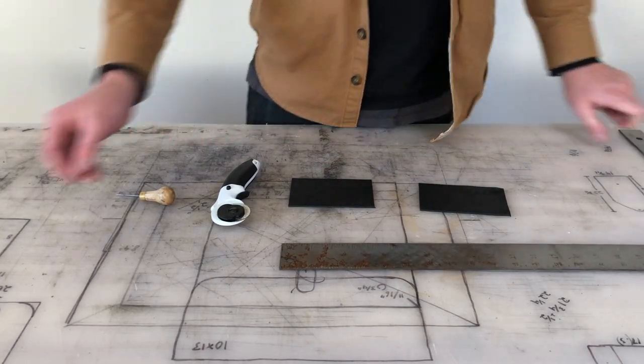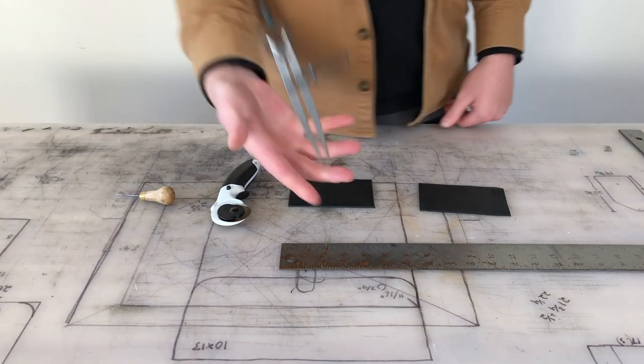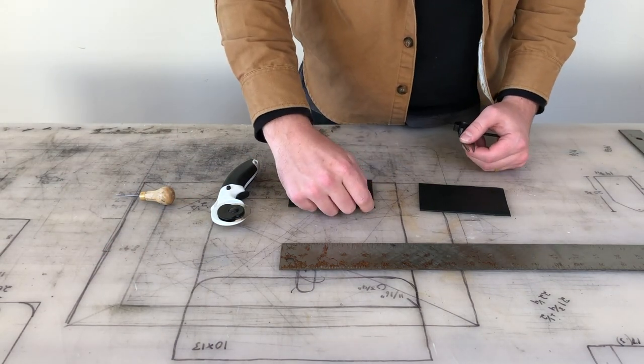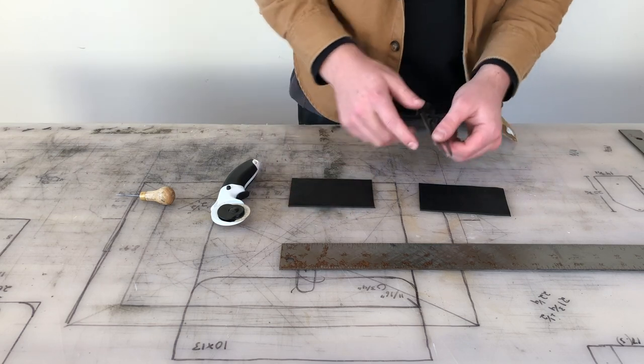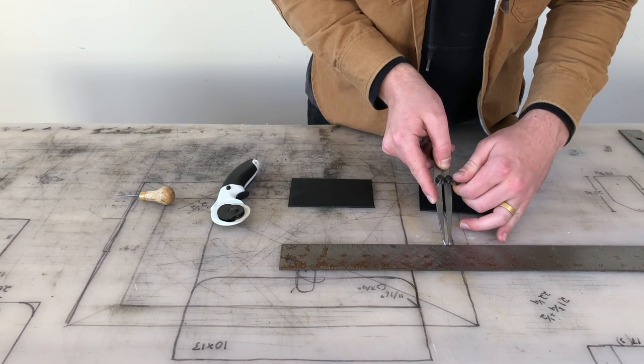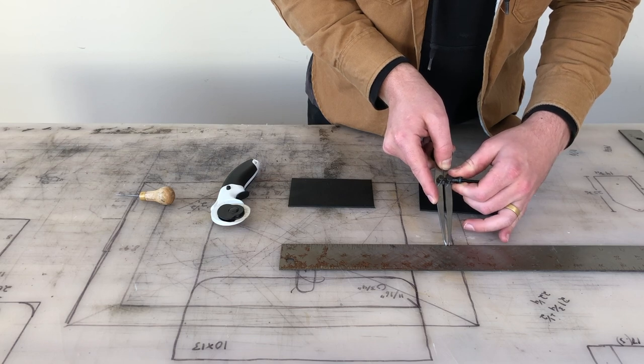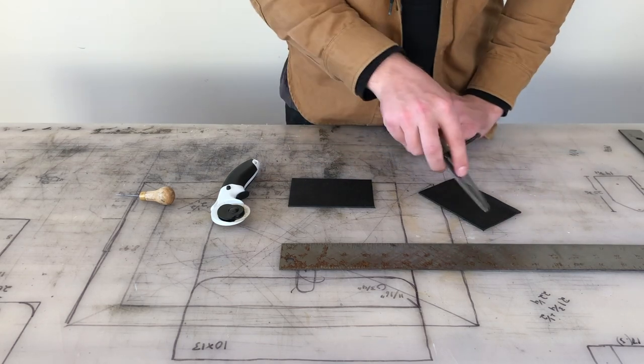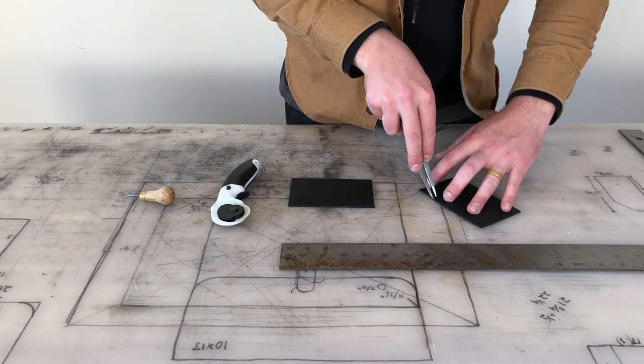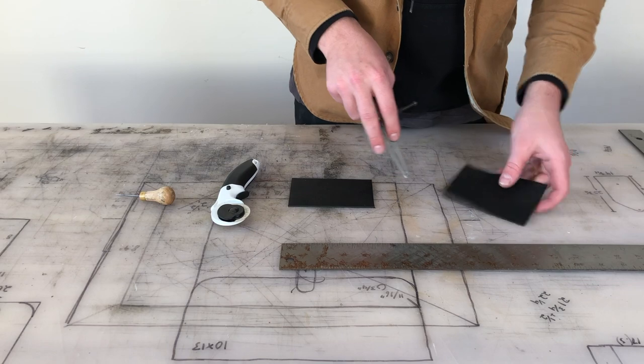So now what I'm gonna do is take one of these guys. The stitching I want to go across I want to be about a quarter of an inch wide. So what I want to do is take half of that, or sorry just over half, so about an eighth of an inch. I'm gonna mark the long sides, which are the sides that are going to be sewn together.